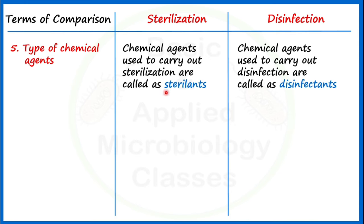Microbiological medium is used in food, medicine, agriculture, environment, and research to study the microbial load associated with a particular object. Microbiological medium is sterilized by moist heat sterilization using an autoclave. And surgical equipment is preferably sterilized using dry heat-based sterilization.